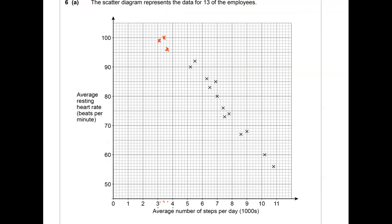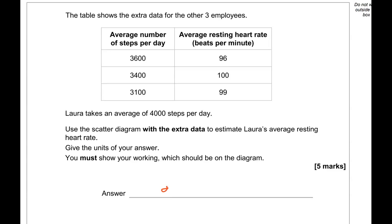Now we need to draw a line of best fit, so a line that goes through this point in the middle. So we'd have the points on each side being equal distance from the line, roughly. Obviously this is not absolutely accurate. So Laura took 4000 steps, which is this point here. So we're going to go and see where that meets the line of best fit. And it is this point here, which is 95, 96, 97. So 97 beats per minute. I'm going to write the answer in the space provided.